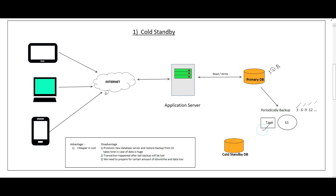On a periodic basis, such as every three hours, we take backups to less expensive storage like tape or Amazon S3. These backup files are stored at regular intervals. If the database goes down, we provision a new database server, restore the backup file to it, bring it up and running, and route traffic to it so it can serve read/write requests.